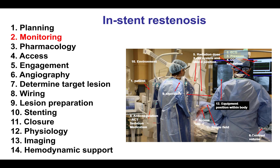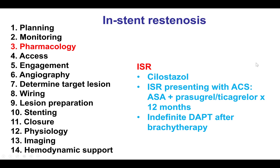Monitoring is done as in every other procedure, paying careful attention to the pressure and the EKG. In terms of pharmacology, sometimes cilostazol has been given to reduce the risk of neointima formation, although there is not very strong data regarding its efficacy. If the patient presents with in-stent restenosis and an acute coronary syndrome, then typically a more potent P2Y12 inhibitor, such as Prasugrel or Ticagrelor, is given along with aspirin for 12 months or more. If brachytherapy is done, then indefinite dual antiplatelet therapy is needed to minimize the risk of stent thrombosis.